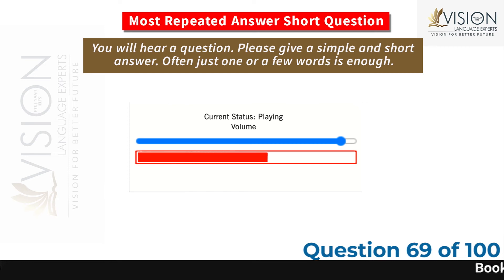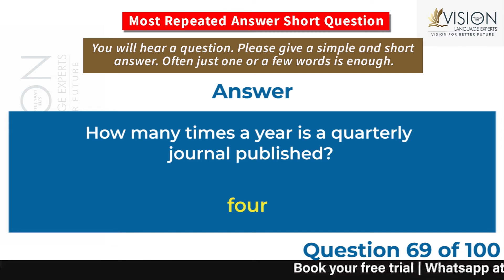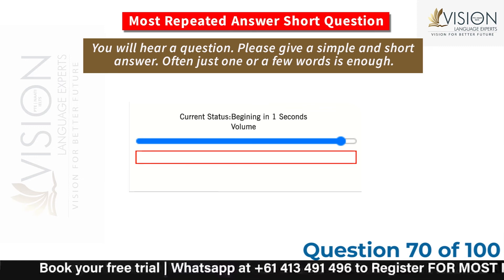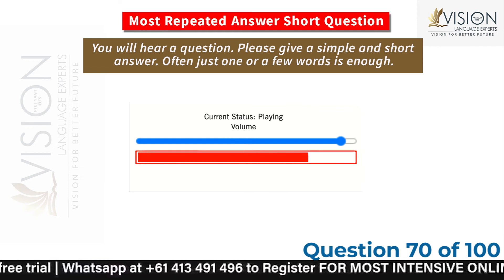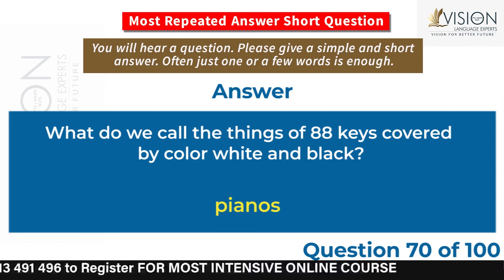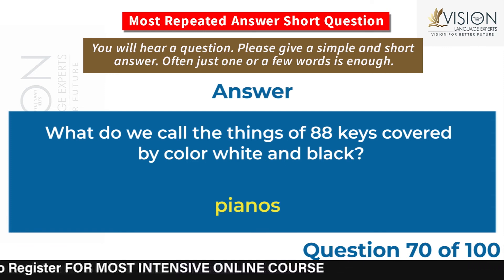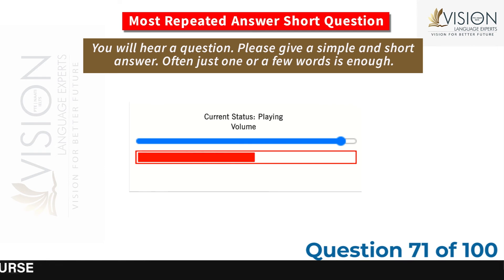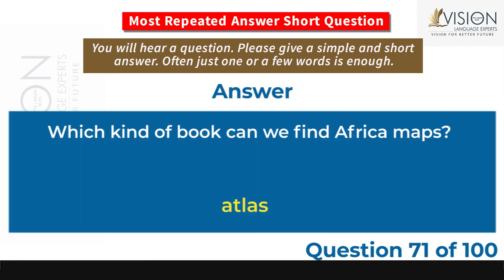How many times a year is a quarterly journal published? 4. What do we call the instrument with 88 keys covered in white and black? Piano. Which kind of book can we find Africa maps in? Atlas.